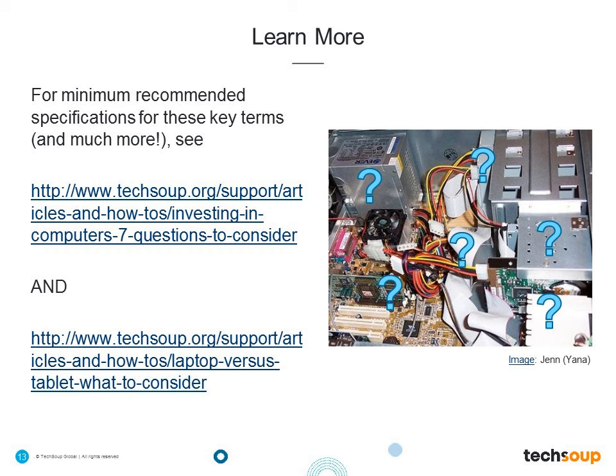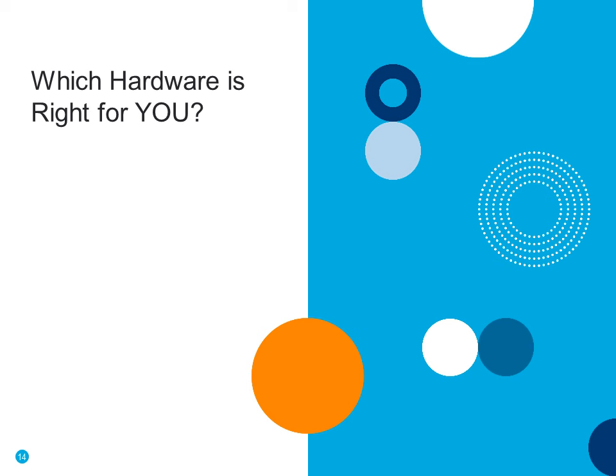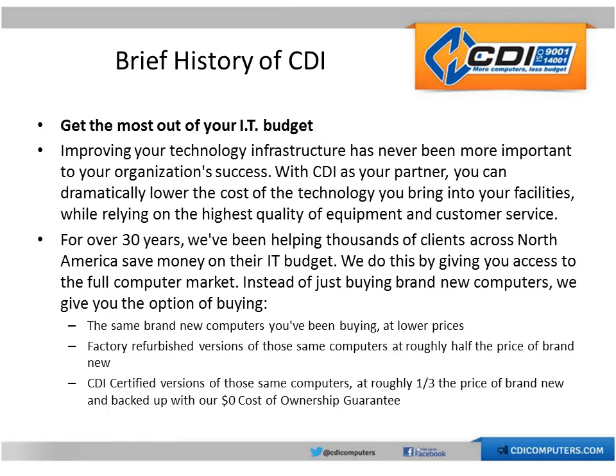There's a lot more lingo and a lot more parts inside of a computer or other device. To learn more, as well as to see the minimum standards that we here at TechSoup recommend, we have two articles on TechSoup.org: one is 'Investing in Computers: 7 Questions to Consider,' and the other is 'Laptop vs. Tablet: What to Consider.' They will be included in the slides emailed to you as well as links in the follow-up email. And that's it from my side — I'm going to hand it over to Mike to explain in more detail the questions you should ask when deciding what hardware is right for your organization.